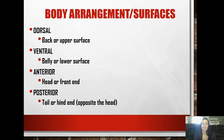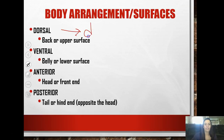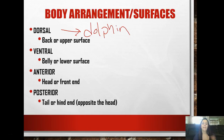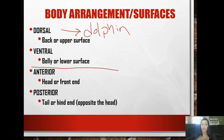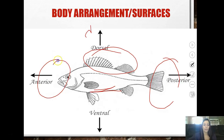In terms of body arrangements, we need to talk about the different surfaces of an animal - four key words. Dorsal is the back or upper surface. Think of a dolphin - dolphins have a dorsal fin. Ventral is the belly or the lower surface. Anterior and posterior go together. Posterior - someone might tell you to sit on your posterior, meaning your butt or hind end - so posterior is opposite of the head. Here's a look at that on a fish: the dorsal fins are on top, ventral is the belly, posterior is the tail end, and anterior is the head.